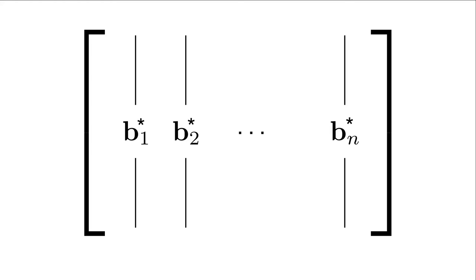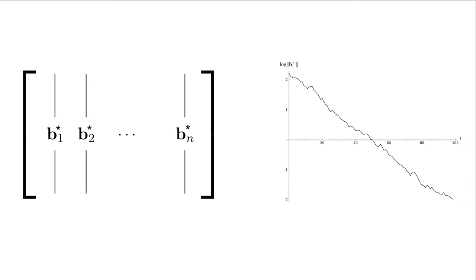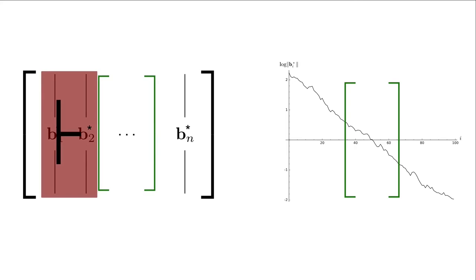In order to quantify the quality of our basis, we're going to look at the length of the GSO vectors of our basis. And we're going to take the length of these vectors and plot it against the index i. And we're going to do so in a log scale. And this gives us the shape of the basis. And the shape is crucial for the quality of our basis. In the rest of this talk, we will focus on these shapes of bases, and we will represent bases by their shapes. I want you to remember throughout this talk that what I really mean by this is actually the corresponding projected sub-block in the corresponding basis.